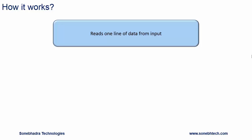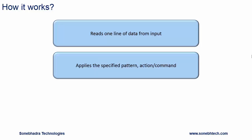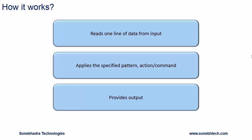How it works? Here are the steps awk follows for manipulating data. First, it reads one line of data from input - the input can be a data file. Then it applies the specified pattern, action, or command on that line. Then it provides output, displaying the result to standard output. It then reads the next line and applies the same pattern, action, or command, repeating this for all lines of the data file.